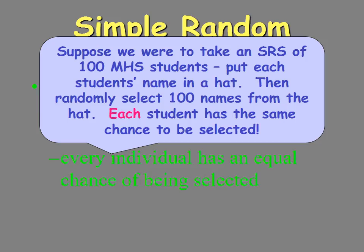So if we're going to take a simple random sample of 100 students, we put each student's name in a hat and then randomly select 100 names from the hat. Each student has that same chance of being selected. The most important word — and you'll always have to use this word to get full credit — is the word random.